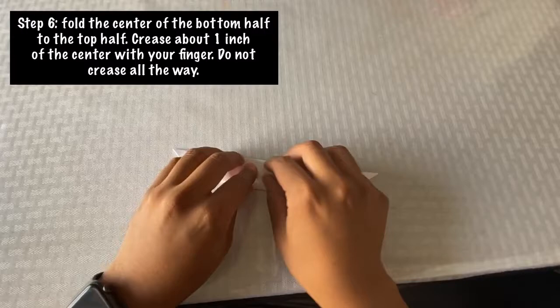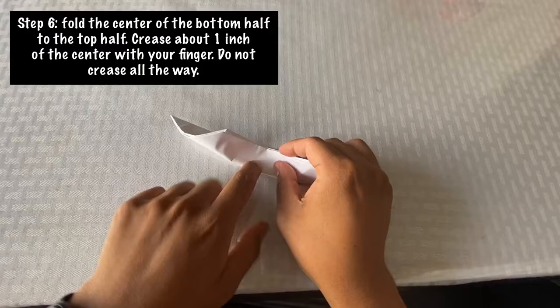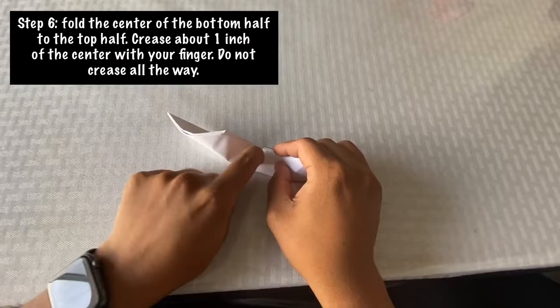This next step is a little tricky. Step 6: fold the center of the bottom half to the top half. Crease about one inch of the center with your finger. Do not crease all the way. What you're going to do is fold up the bottom half and then crease it in the middle with your fingernail. Get a good crease on there.